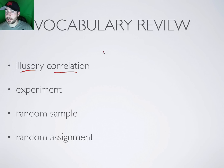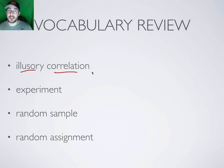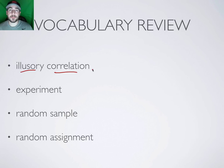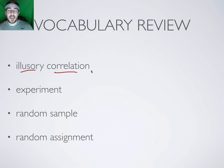Another example of illusory correlation is going outside without a jacket and catching a cold. Your mom tells you to put on a jacket or you'll catch cold, even though from a scientific standpoint there's no real correlation between going outside without a jacket and catching cold. But if you do happen to catch cold, she'll remember that time and say 'I told you so' — that's an illusory correlation.